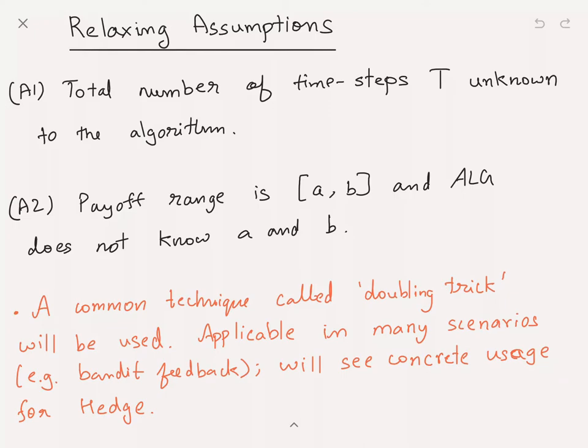We made two critical assumptions. First, the total number of time steps T was known to the algorithm. Second, the payoff range was in the range [0,1]. We want to handle the case where T is unknown and the payoff range is in some arbitrary range [a, b] where a and b are also unknown. It turns out that by using a simple technique called the doubling trick, we can handle both these scenarios.